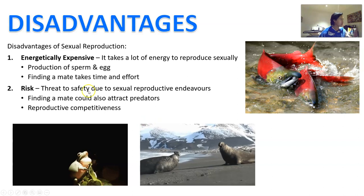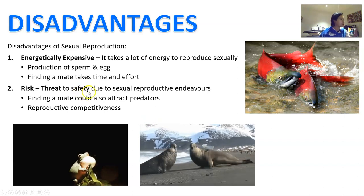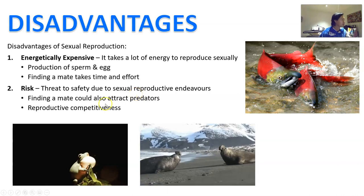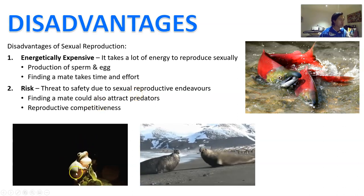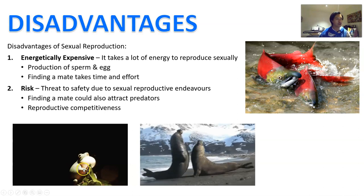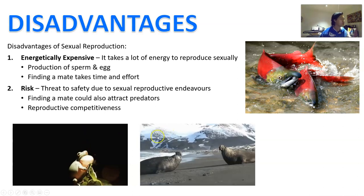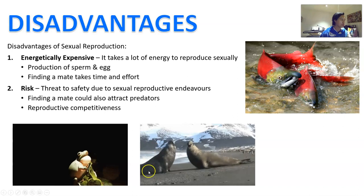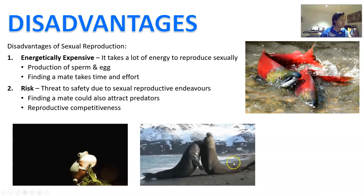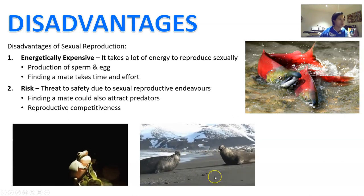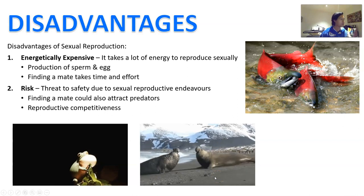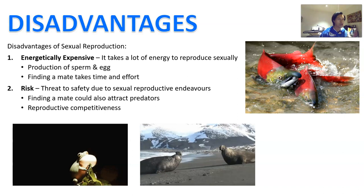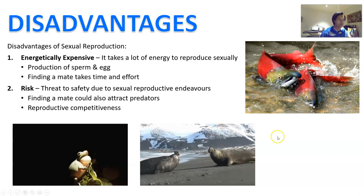There's also risk — a threat to your safety because of your sexual endeavors. For example, finding a mate, like frogs calling out for their mate, could also end up attracting predators. There's also reproductive competitiveness: these are two elephant seal males fighting it out for the right to have a little harem of females along the beach. The winner gets the reward; the loser either dies or gets chased away and has to live to fight another day.